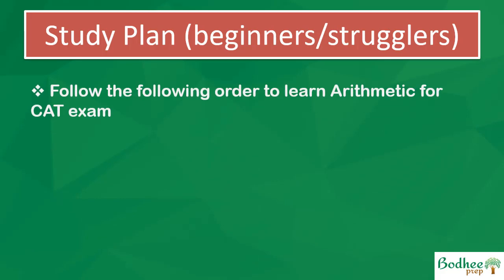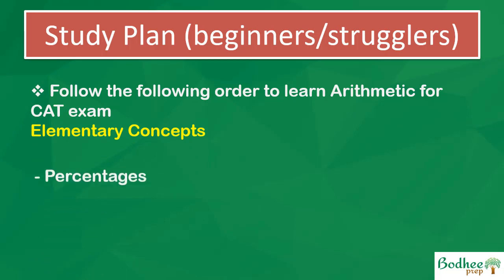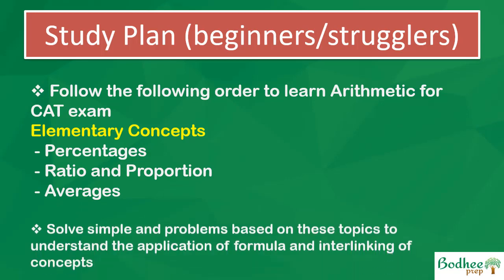What should be the plan for beginners? Follow this order: elementary concepts first — percentages, ratio and proportion, averages. You should be thorough with percentages, able to quickly calculate, for example, if your marks go down by 25%, what is your new score. Solve simple problems based on these topics to understand the application of formulas and the interlinking of concepts — this is very important.